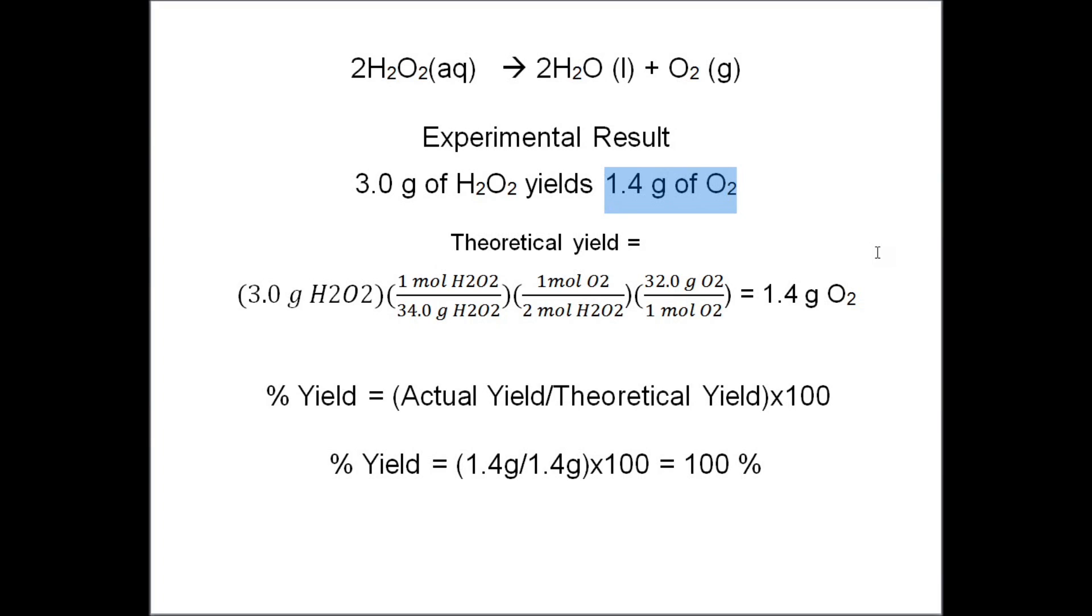In order to calculate the percent yield, we need to calculate the theoretical yield. And so we take the amount of hydrogen peroxide, 3 grams, we convert it to moles by multiplying by 1 mole divided by 34.0 grams per mole.